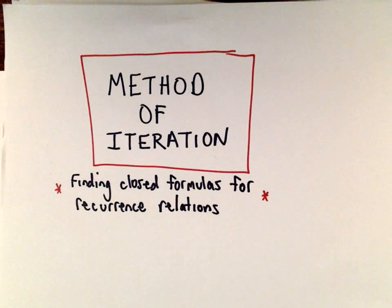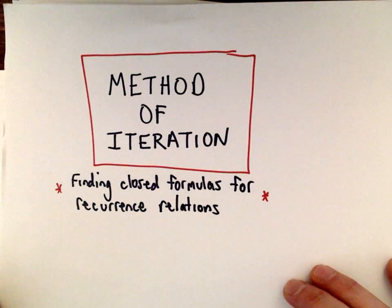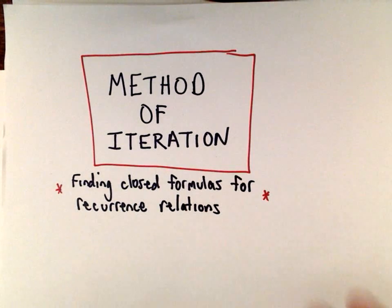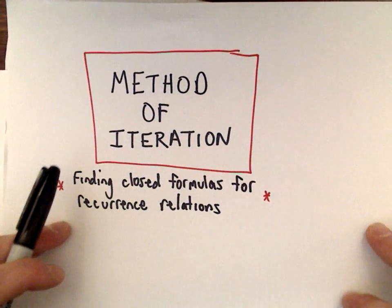This video is going to be about what's known as the method of iteration, where you're trying to find closed formulas for recurrence relations or recursive sequences. You might run into something like this in a discrete math class or a computer science class.